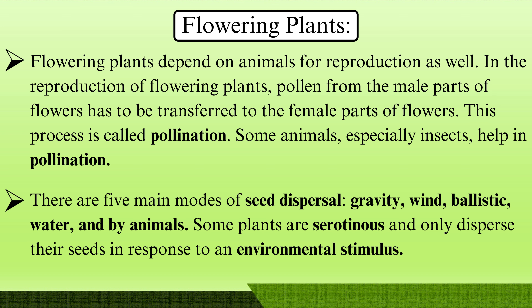There are five main modes of seed dispersal: gravity, wind, water, and by animals. Some plants are serotinous and only disperse their seeds in response to an environmental stimulus.